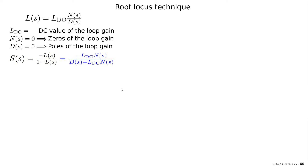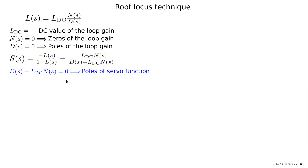Multiplying both numerator and denominator of the several function by the denominator of the loop gain D(s) simplifies the expression. The poles of the several function — which is what we are interested in — can be found from the solution of the denominator set to zero: D(s) minus L_DC times N(s) equals zero. The root locus is a graphical method to find those solutions.